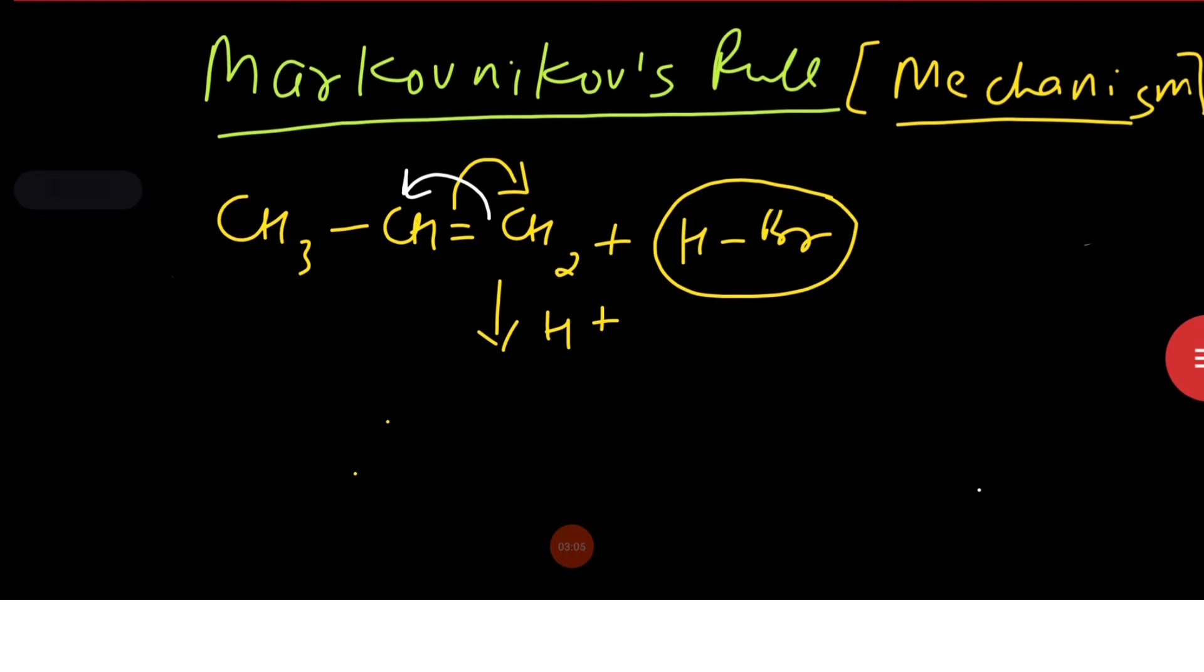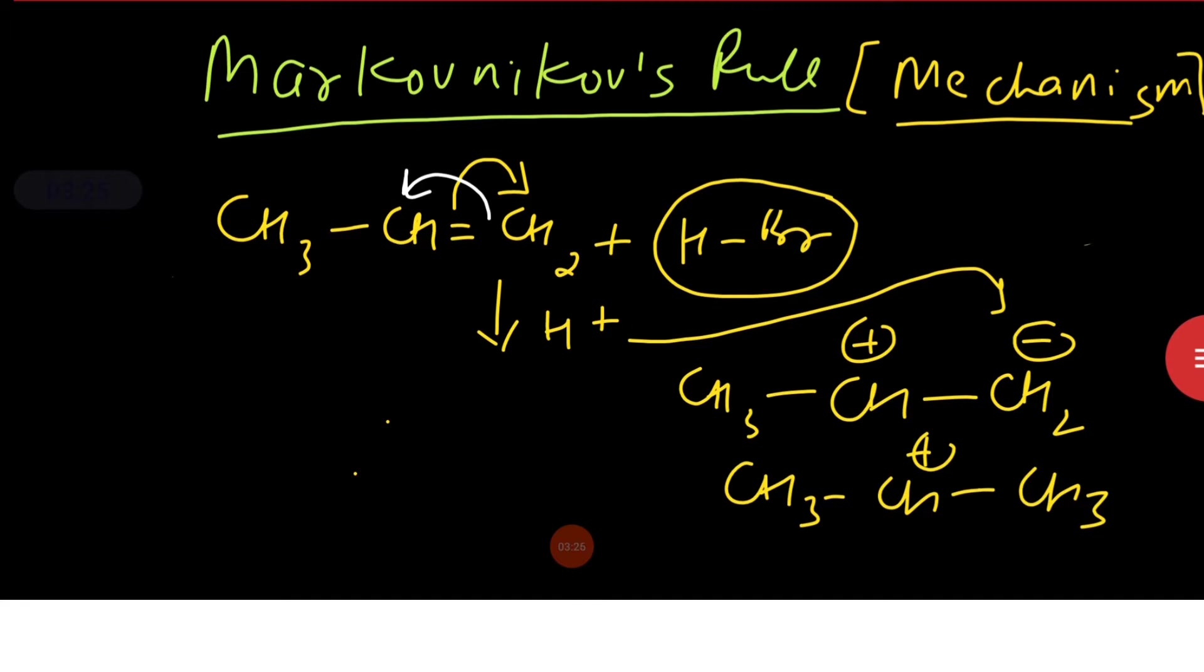if you follow the yellow arrow, then we expect this to form on which H plus attacks and finally forms secondary carbocation. If you follow the white arrow,